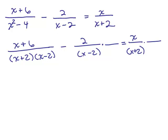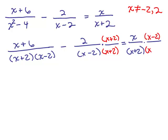The common denominator is going to be x plus 2 times x minus 2. What can x not be? Since x plus 2 can't be 0, x can't be negative 2. Since x minus 2 can't be 0, x can't be positive 2. So we multiply the second fraction by x plus 2 over x plus 2 so it has the common denominator, and we multiply the other fraction by x minus 2 over x minus 2. Now all denominators are the same, so the numerators are equal.